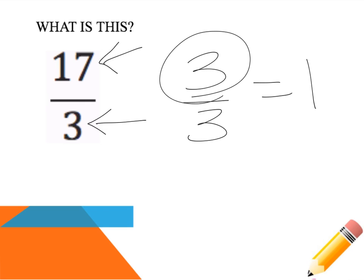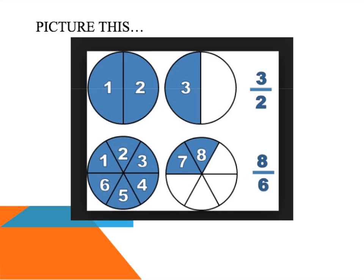A great way to think about this is with models. Take three halves — my denominator is two, meaning two parts make a whole. If I draw a circle cut in half, three halves means one half, two halves, and three halves. Two halves make one whole, so three halves equals one whole and one half left over. So three halves is the same thing as one and one half.